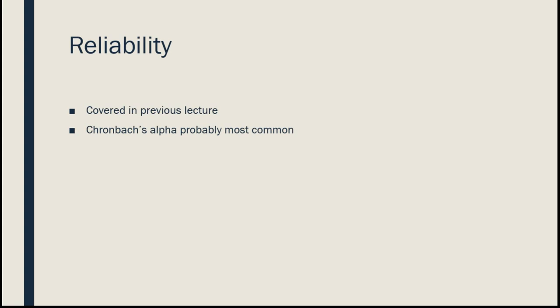The next step is checking reliability. Cronbach's Alpha is probably the most common measure of reliability used in scale development. It gives a value for internal consistency reliability within the scale. Generally, higher is better — but we don't want values too high above 0.9, because then we're essentially asking about the exact same thing repeatedly. We want some overlap, but not complete redundancy across items.